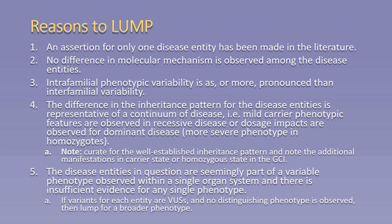In these instances, we would note to curate for the well-established inheritance pattern and note the additional manifestations in carrier state or homozygous state in the gene curation interface and on evidence summaries. Lastly, the disease entities in question are seemingly part of a variable phenotype observed within a single organ system and there is insufficient evidence for any single phenotype. Specifically, if variants for each entity are variants of unknown significance and no distinguishing phenotype is observed, we would encourage lumping for a broader phenotype.